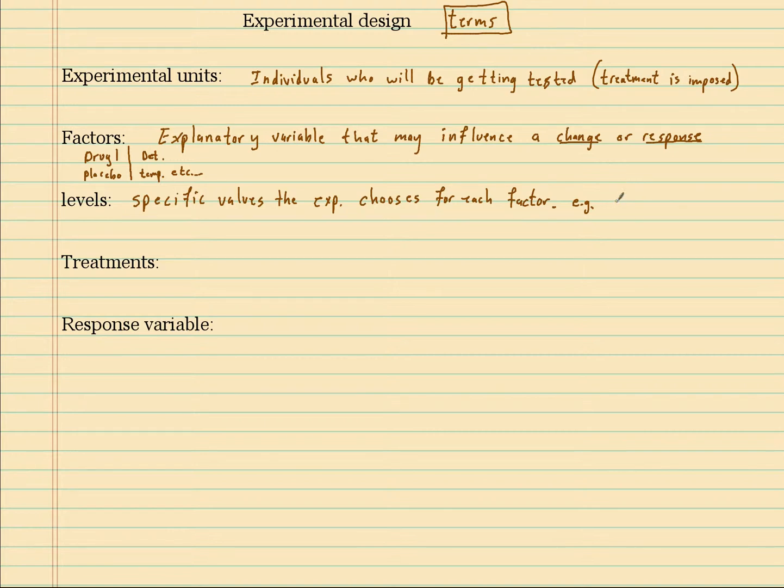For getting clothes clean, one of the factors could be temperature. Each temperature would be a level. So I could have it at 110 degrees, 90 degrees, and 80 degrees. The factor is temperature, and the experimenter has set three levels, the different temperatures.